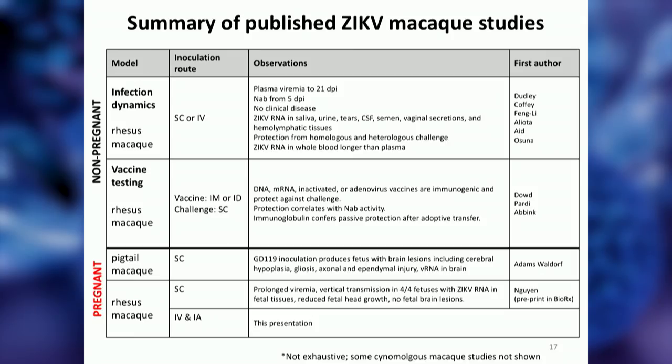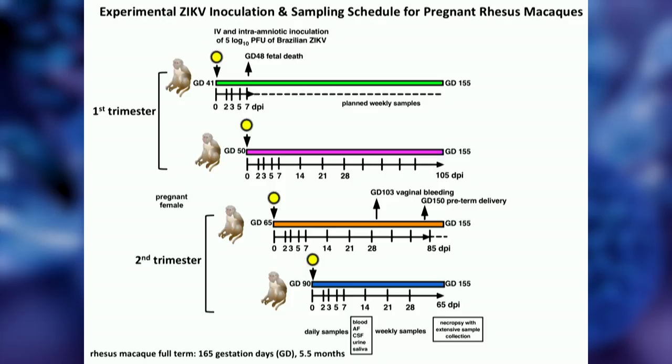When we designed our pregnancy studies a year and a half ago, the efficacy of vertical transmission wasn't well known. With only four animals, we wanted to ensure fetal infection, so we decided — acknowledging it's an artificial route — to inoculate the dam intravenously and simultaneously inoculate the fetus intra-amniotically. With pilot funding from the California Primate Center, we inoculated two first-trimester and two second-trimester animals. Full term in a rhesus macaque is 165 days, or five and a half months. Our plan was to necropsy at near-term GD 155 — ten days before full term — for extensive sample collection.